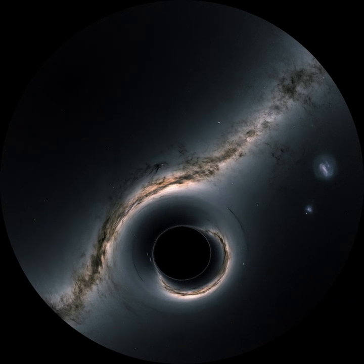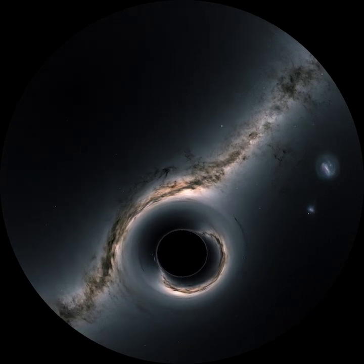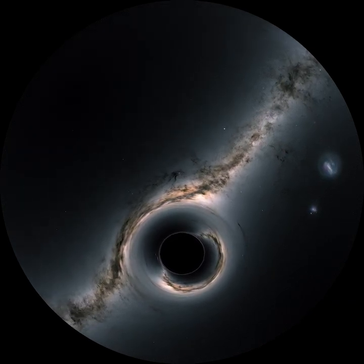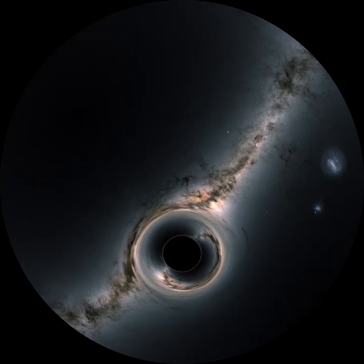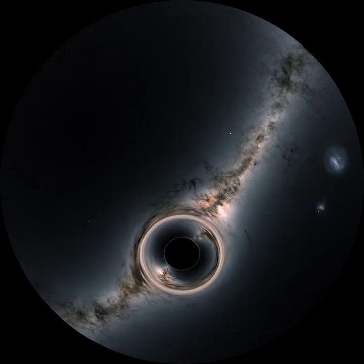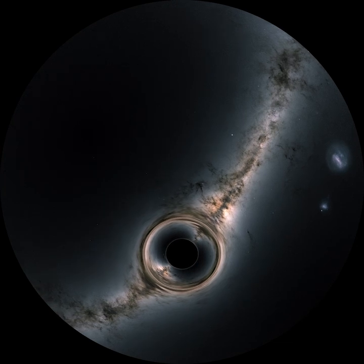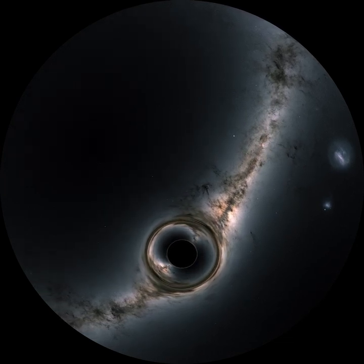This is what a black hole would look like as it moves between us and the Milky Way. As you can see, some of the Milky Way's light has traveled around the black hole and is now reaching us from the opposite side—a phantom image.